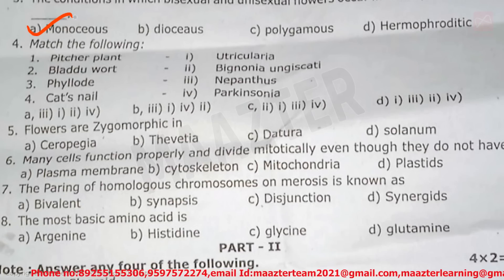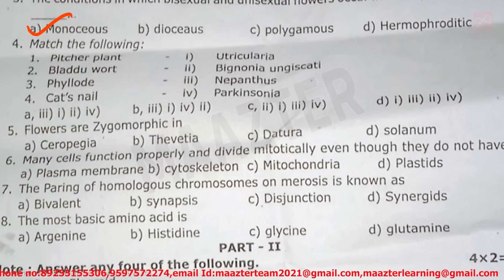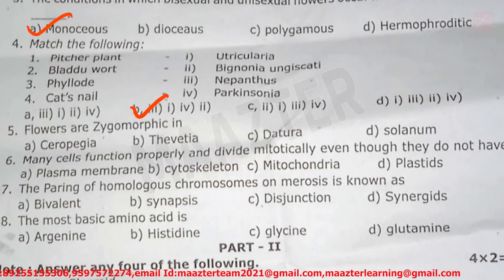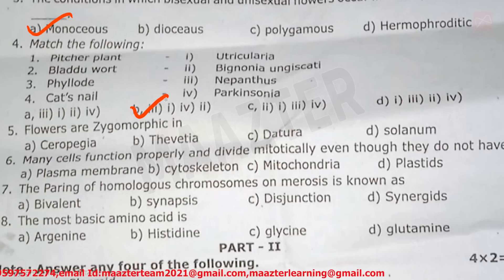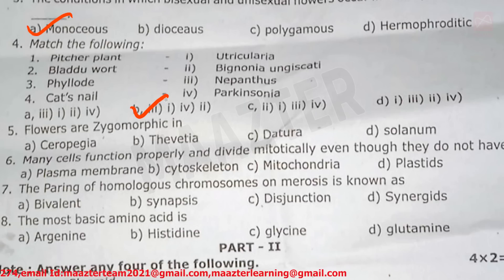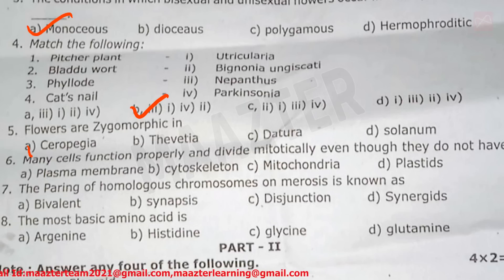Next, match the following — Option B. Then fifth question: flowers are zygomorphic. Let's see the answer — Option A.